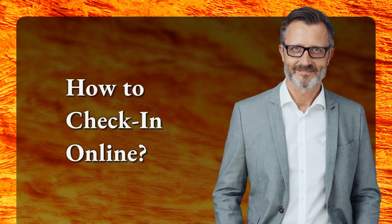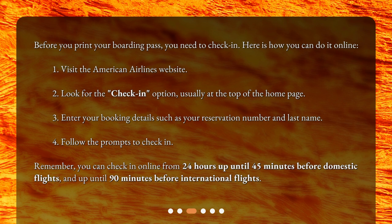How to check in online? Before you print your boarding pass, you need to check in. Here is how you can do it online: 1. Visit the American Airlines website. 2. Look for the check-in option, usually at the top of the home page. 3. Enter your booking details such as your reservation number and last name. 4. Follow the prompts to check in. Remember, you can check in online from 24 hours up until 45 minutes before domestic flights and up until 90 minutes before international flights.